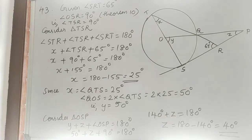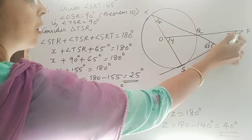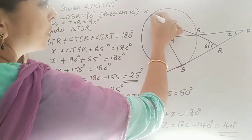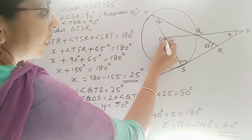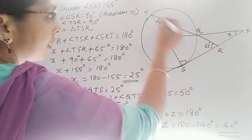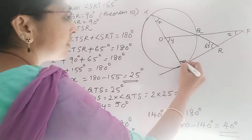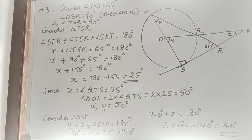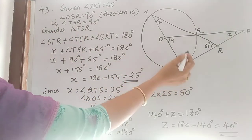Given angle SRT is equal to 65 degrees, look at angle OSR, or we can say OTSR or TSP. This angle S will be 90 degrees. How? Using theorem 10. A tangent at any point of a circle and the radius through this point are perpendicular to each other. That is theorem number 10. So angle OSR, this S will be 90 degrees.